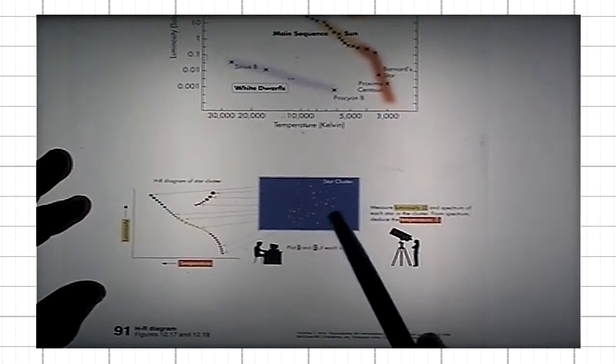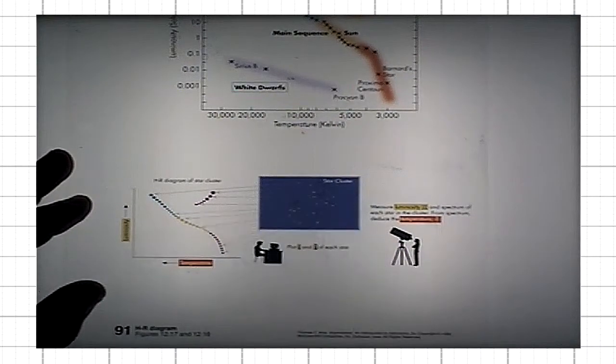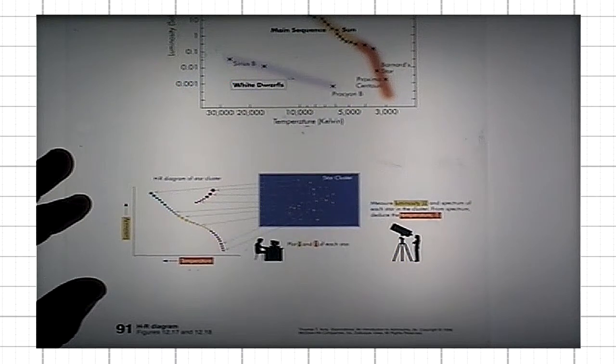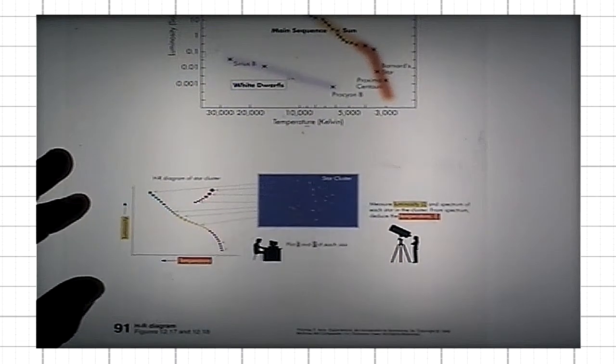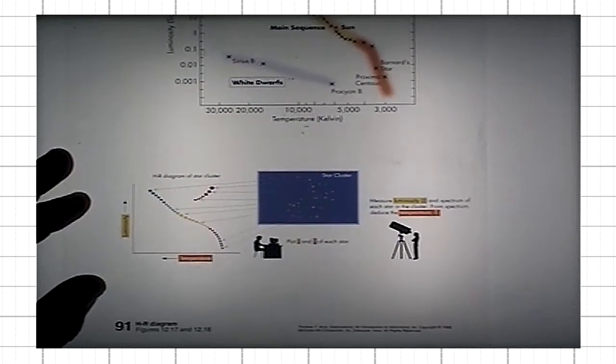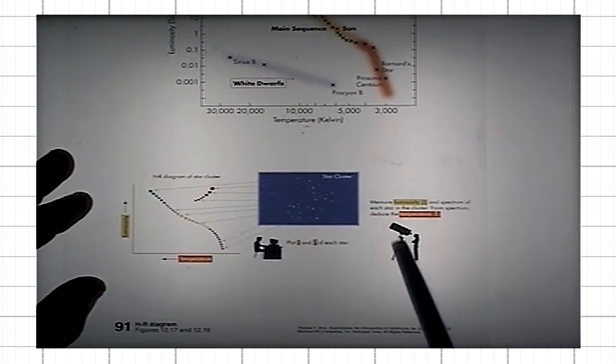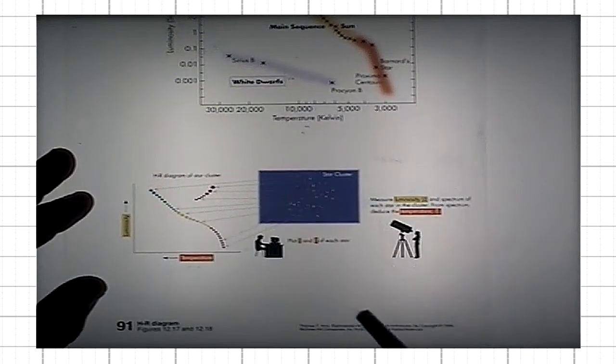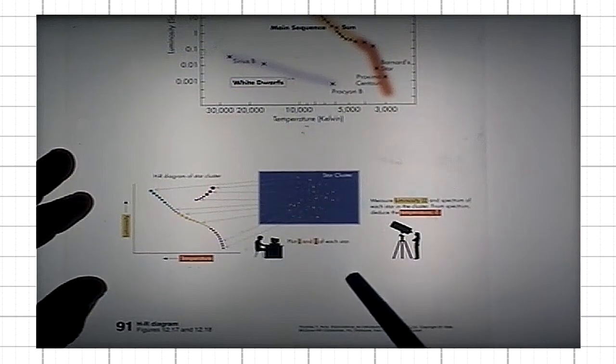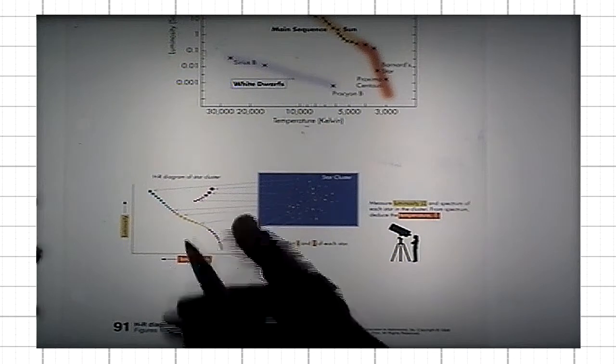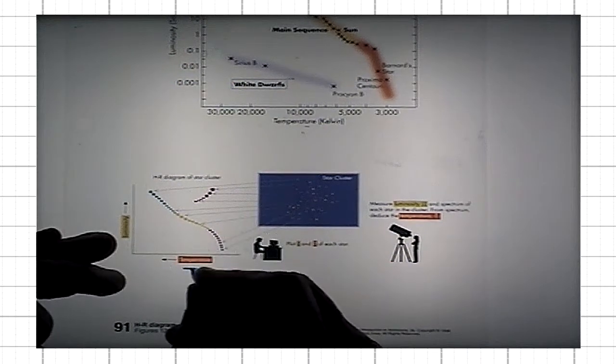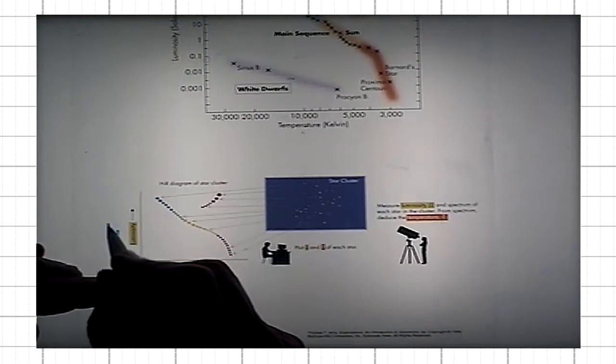What you do, you take a star cluster or you take several such clusters. For each star in the cluster, or in a set of clusters, you measure in the ways we discussed their surface temperature and their luminosity. Here is the temperature, surface temperature, and luminosity of the star.